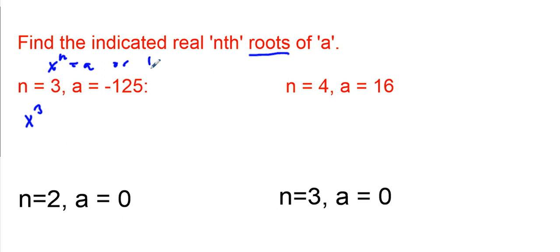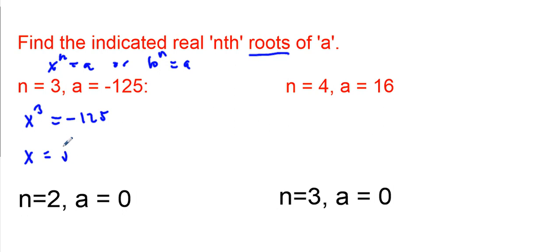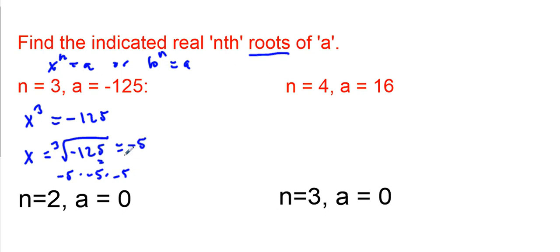Sometimes the book will say b to the nth power equals A, but that's what we're looking for. So for this first one, x to the nth power equals negative 125. If you recall from my previous tutorial, to figure out what x is, we use the inverse operation. The inverse of x cubed is the cube root. Negative 5 times negative 5 times negative 5 gives us negative 125, so negative 5 is our solution — that's our root, and we have one solution.